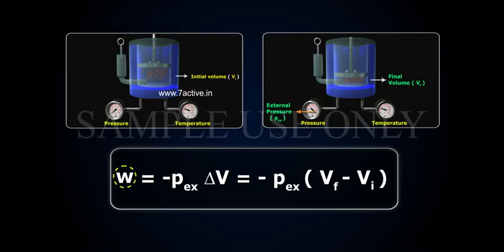Then, W, work done on the system, is equal to minus external pressure into change in volume, that equals to minus external pressure into final volume minus initial volume.